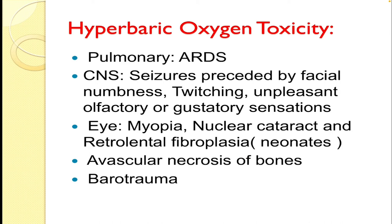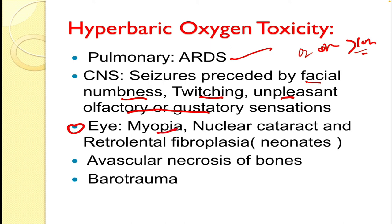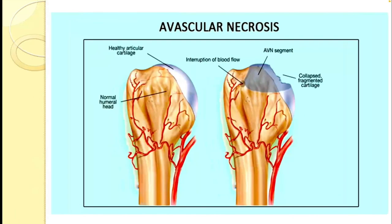Another important topic is hyperbaric oxygen toxicity. It is due to oxygen therapy at pressures greater than 1 atmosphere. Pulmonary manifestations include acute respiratory distress syndrome. In the CNS, there are seizures preceded by facial numbness, twitching, and unpleasant olfactory and gustatory sensations. In the eye, there is myopia, nuclear cataract, and retrolental fibroplasia, most commonly in neonates. Another important manifestation is avascular necrosis of the bones, and there is also barotrauma. Avascular necrosis is due to vasoconstriction in the bone tissue causing interruption of blood flow, which leads to avascular necrosis of the bone segment.